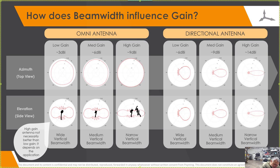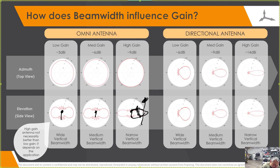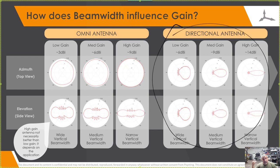The higher the gain, the further out the antenna reaches — but we lose height. We're flattening the doughnut shape out, so if a tower is very far away but positioned high above us, we might miss it because we've squeezed the radiation pattern flat. So there's a tradeoff between gain distance and vertical coverage when choosing the right omni antenna.